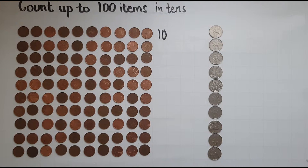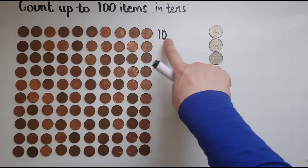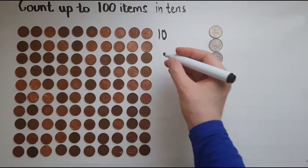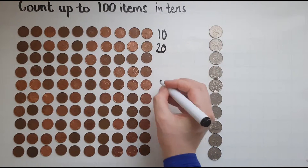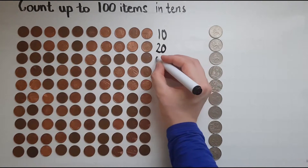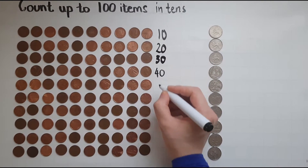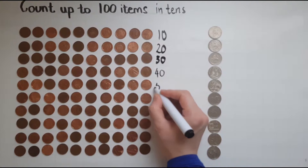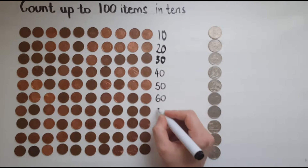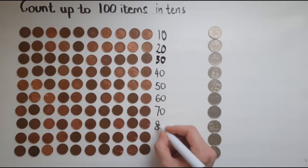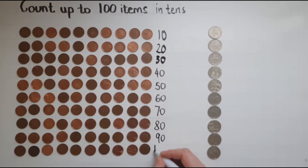So I need to learn to count up in 10s, so going up in 10s. 10 and another 10, that makes 20. Then 30, 40, 50, 60, 70, 80, 90, 100.